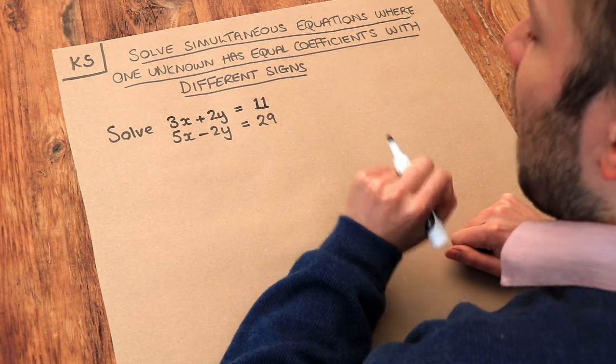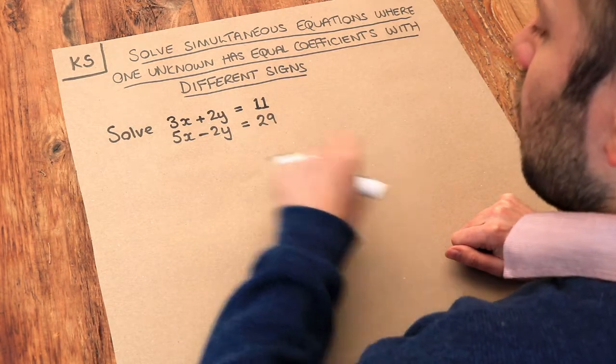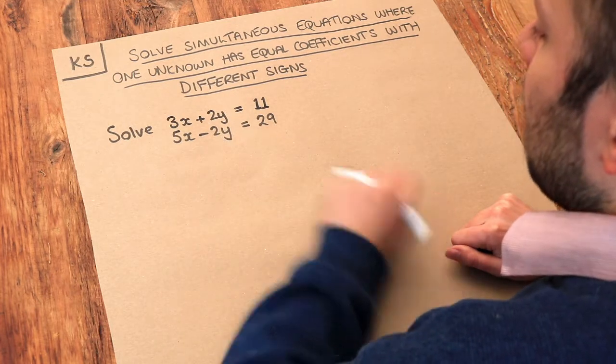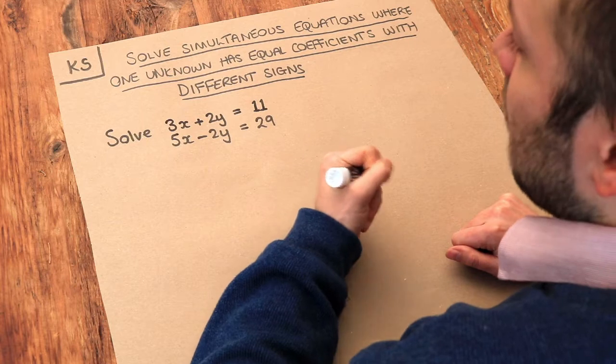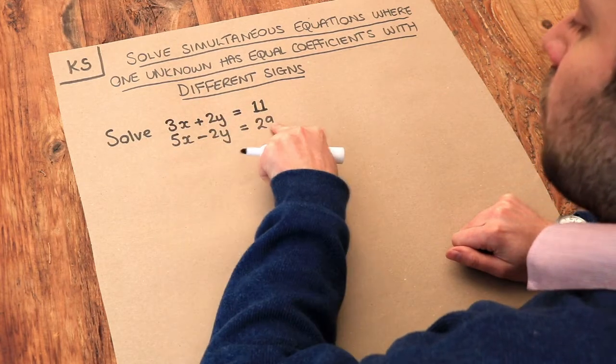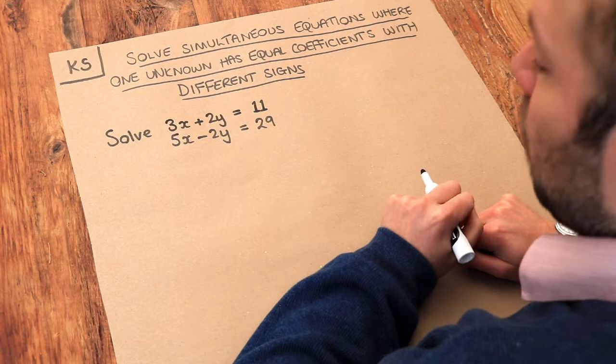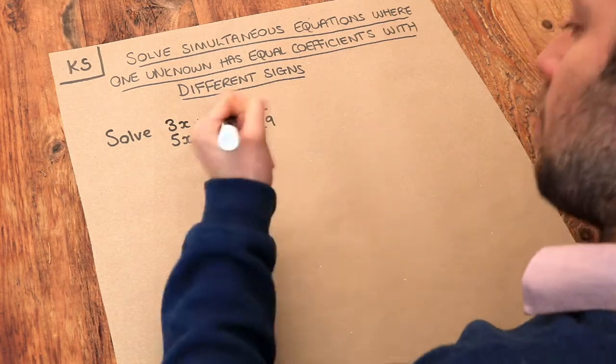And remember that simultaneous equations is when we have more than one equation with more than one variable, so in this case we've got two equations with two variables, x and y, and we want to find out the value of x and y which satisfies, which works with, both of these equations at the same time, simultaneously.